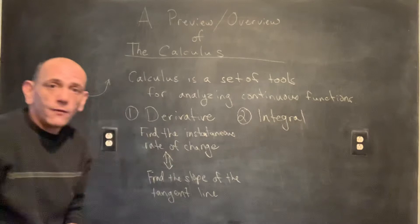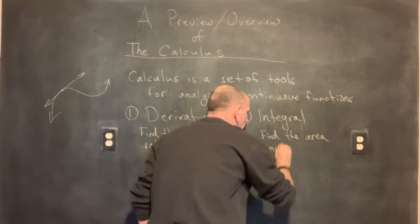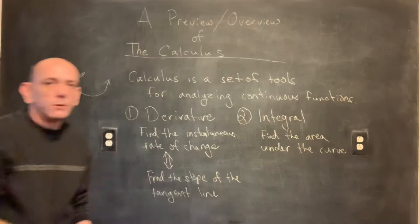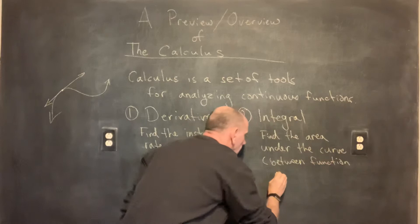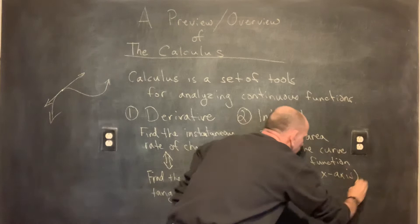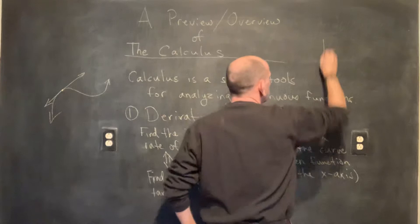The problem that the integral solves is finding the area under the curve — that is, the area between the curve and the x-axis, between the function and the x-axis. Now, we can do that for certain functions in particular.